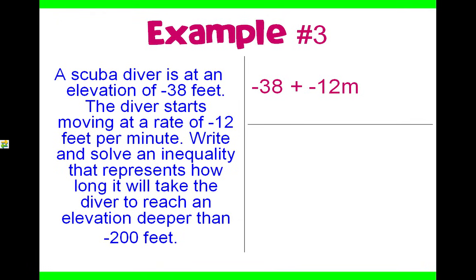We are trying to figure out how long it will take the diver to reach an elevation deeper than negative 200 feet. This represents where the diver is going. If we want it to be deeper than negative 200 feet, you want it to be less than negative 200 — because as you go deeper and deeper, it's going to be smaller than negative 200 feet. So we represent that by less than negative 200. Our inequality to represent this problem is: negative 38 plus negative 12m is less than negative 200.